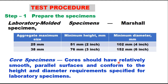The test procedure begins with specimen preparation. The code suggests laboratory-molded specimens similar to Marshall specimens. If the aggregate maximum size is 25 mm, the minimum height of specimen should be 2 inches or 51 mm, and the minimum diameter will be 4 inches or 102 mm. If aggregate maximum size is 38 mm, the minimum height of specimen should be 76 mm.